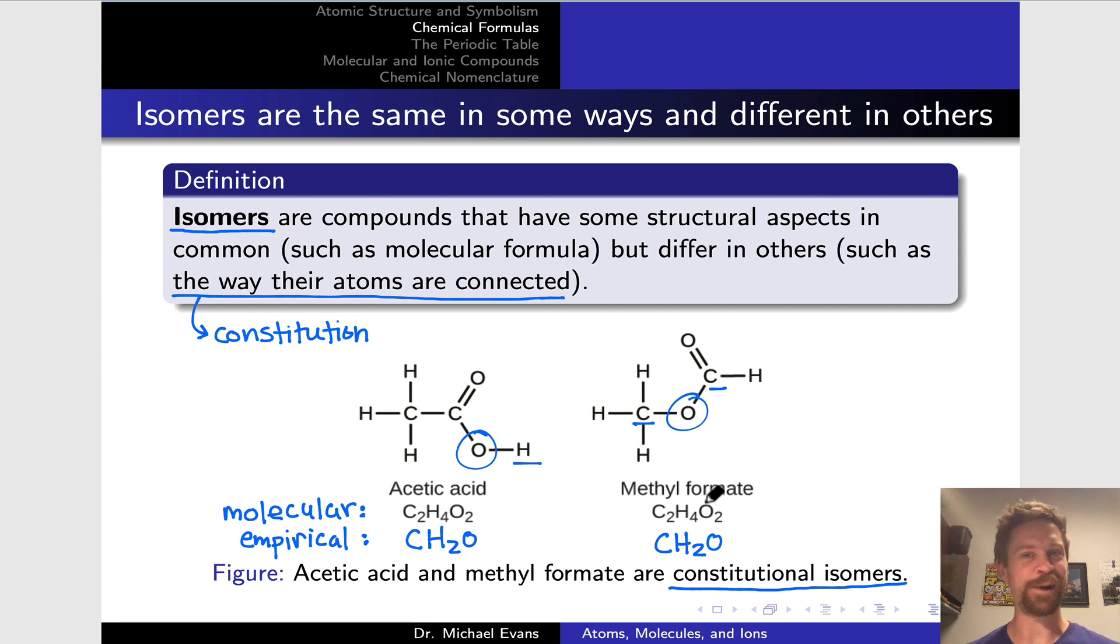However, some of their properties are the same. Anything related to the numbers and types of atoms within the compounds will be the same for acetic acid and methylformate. But anything that depends on structure, which a lot of properties do, and reactivity absolutely does, will be different for these two compounds. You'll see isomerism returning as a theme throughout your chemistry courses. This foundational concept of structure is worth keeping in mind as you advance and learn more about molecular structure.